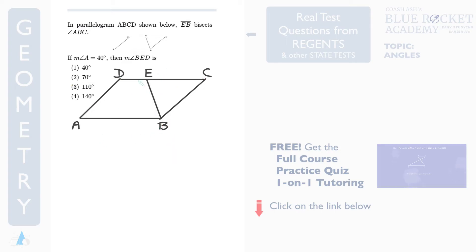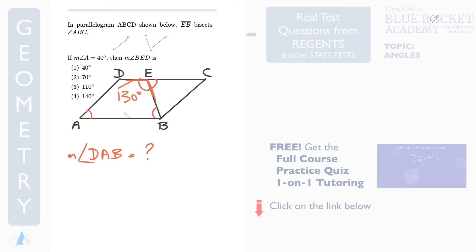Now it's your turn to solve. What if BED is given to be 130 degrees? Can you backtrack your way to find angle DAB? You know what this angle is, then go to this angle, then go to this angle. Remember, it's a parallelogram, so use all of these properties to backtrack and get your answer. Post your answers in the comments.